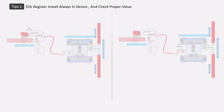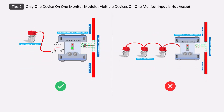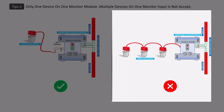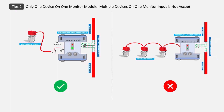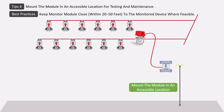When installing the monitor module, keep these tips in mind. First, the EOL resistor should always be installed at the third-party device terminal and its value should be checked to ensure it is correct. Second, connect only one device per monitor module — we cannot connect multiple devices to a single monitor module, as we won't get the pin location of which device operated. Third, always install the monitor module in a black box or enclosure. Fourth, the module should always be installed in an accessible location so that it can be properly tested and maintained.